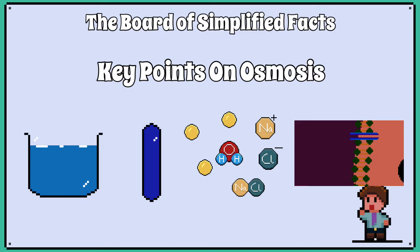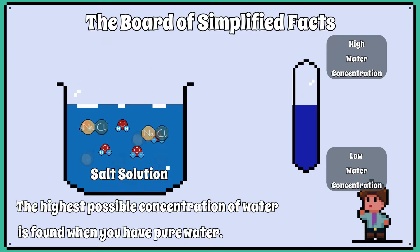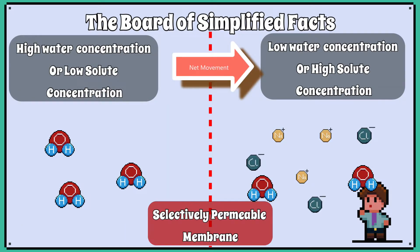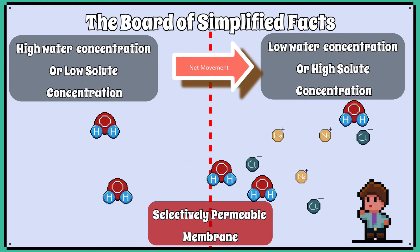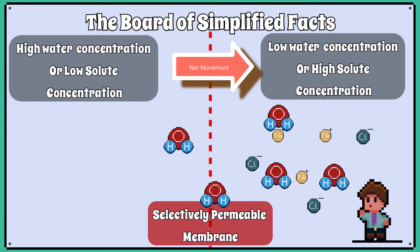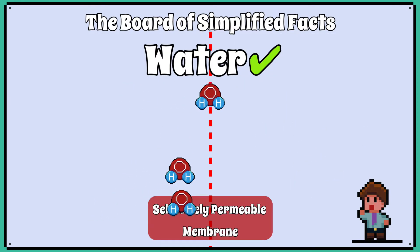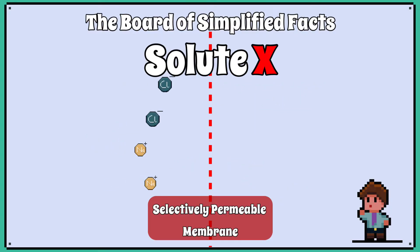Here are some key points you need to understand regarding osmosis. The highest possible concentration of water is found when you have pure water. When solutes are added to water, like salt for example, they lower the water concentration. So a region of pure water — high water concentration and low solute concentration — will diffuse into a region of salty water, so low water concentration and high solute concentration, by a selectively permeable membrane. A selectively permeable membrane is a membrane which allows water molecules through, but not the solute that is dissolved in the water.